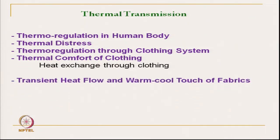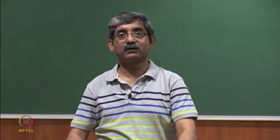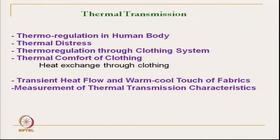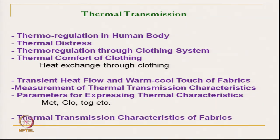Then transient heat, which actually gives warm-cool touch — that is the heat transmitted from our skin to the cloth immediately within a second normally. Then we have discussed how the thermal transmission characteristics are measured, and what are the different practical parameters like MET, CLO and TOG, how they are related with each other. And how CLO is practically used in application. Thermal transmission characteristics of fabrics in detail — various factors which affect the thermal transmission characteristics have been discussed.